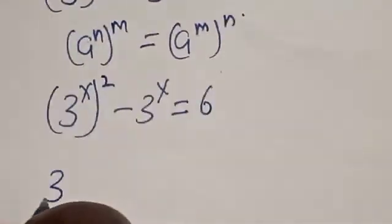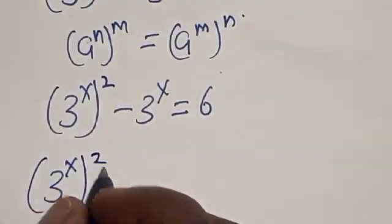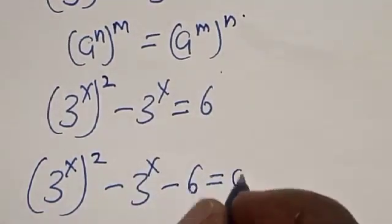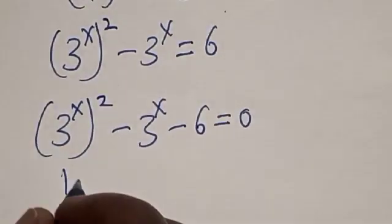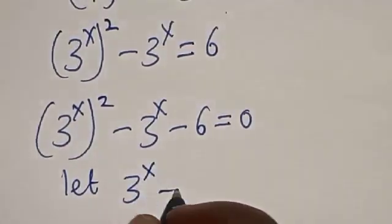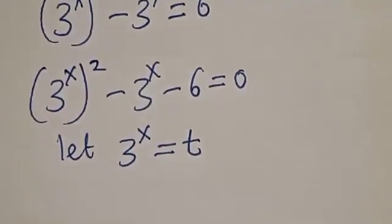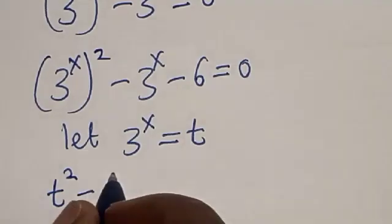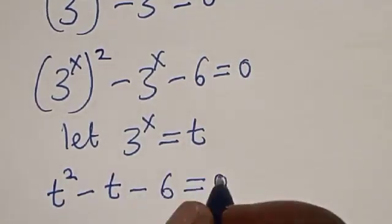Now, 3 raised to power x, squared, minus 3 raised to power x minus 6 is equal to 0. Let t equal to 3 raised to power x. Then t squared minus t minus 6 is equal to 0.